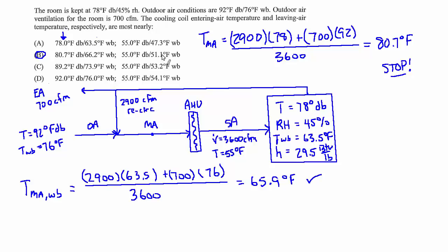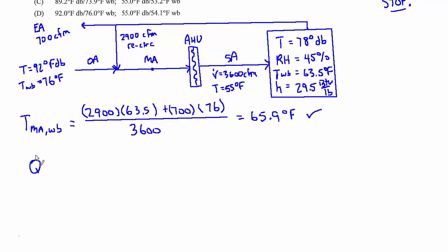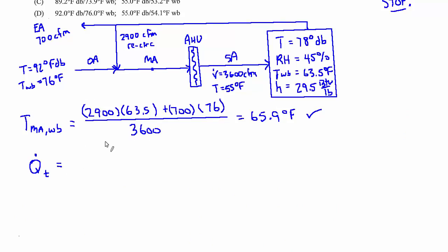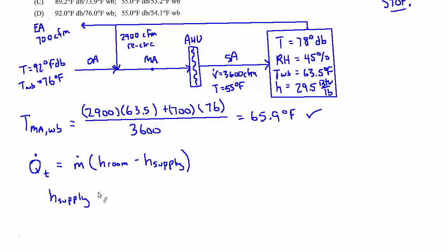Now to find the wet bulb temperature of the discharge air off the coil — the air supplying the room. We were given the sensible and latent heat loads, giving a total load of 130,000 BTU per hour. We can write: total cooling load = ṁ × ΔH, where ΔH is the difference in enthalpy between the room air and the supply air. Rearranging to solve for the enthalpy of the supply: H_supply = H_room − Q_total ÷ ṁ.